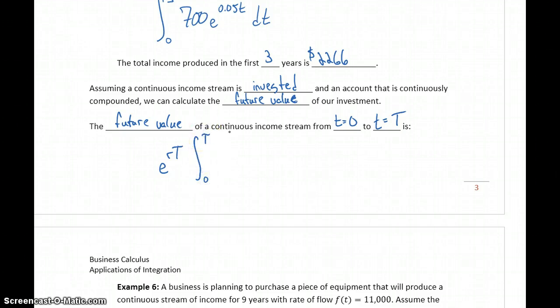The integral from 0 to capital T of f of t, that function for our continuous income stream, times e to the negative rt dt.